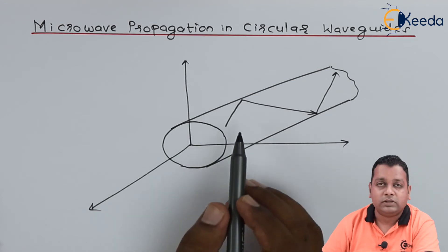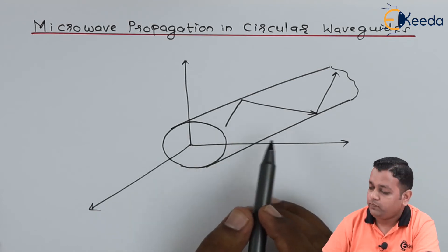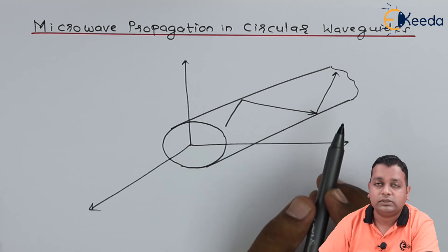Most possibly we consider the air to be the dielectric medium. So this is the circular waveguide.